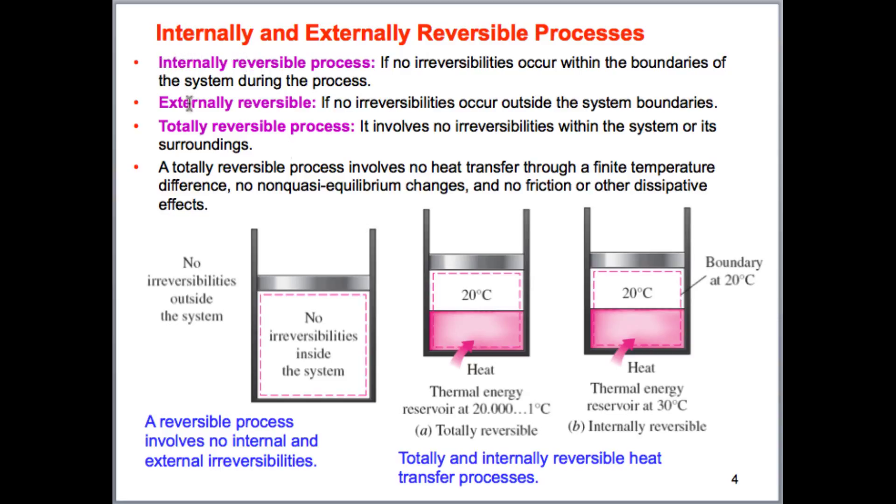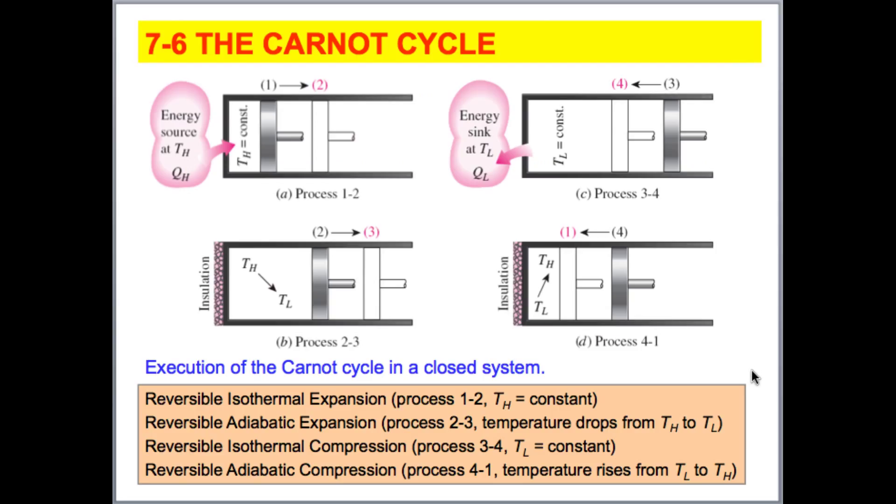Irreversible processes are what we actually deal with. Reversible processes are just the opposite of this. We don't have friction, unrestrained expansion. We're assuming kind of an ideal case that we're dealing with. There's different types of reversible processes: internally reversible, externally reversible. And when both internal and external portions of our analysis are irreversible, it could be totally irreversible systems.